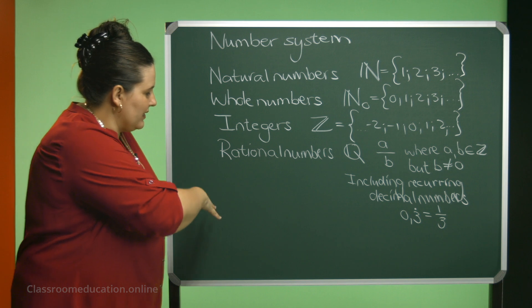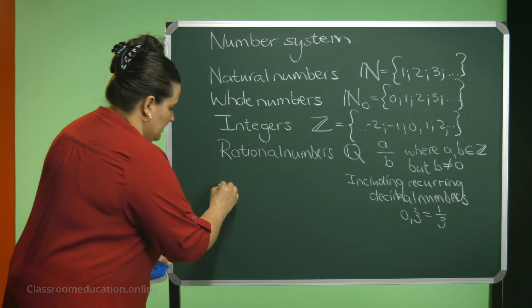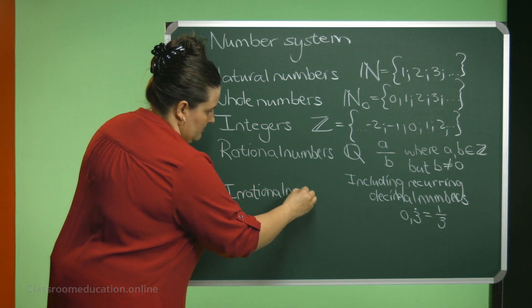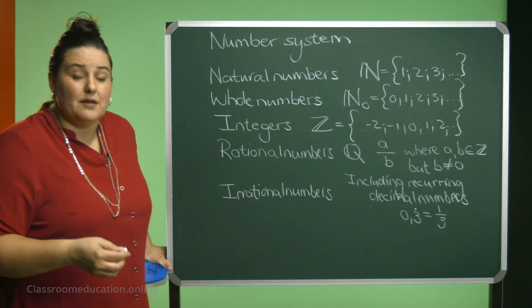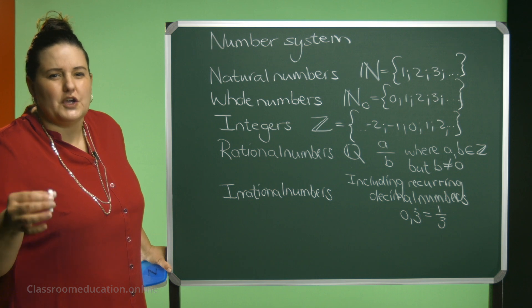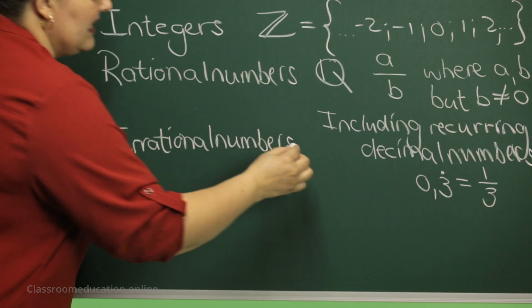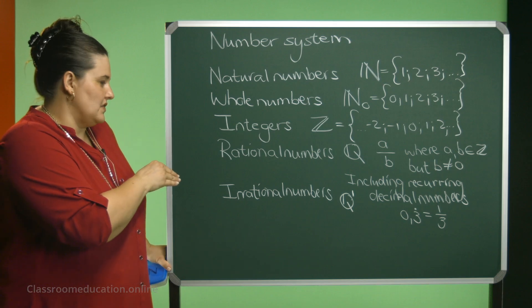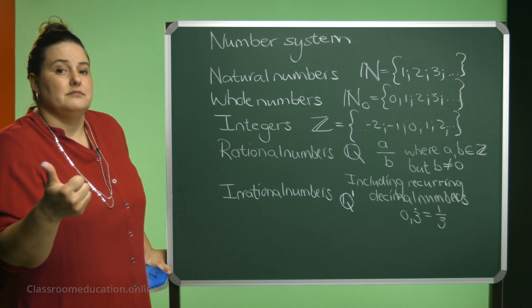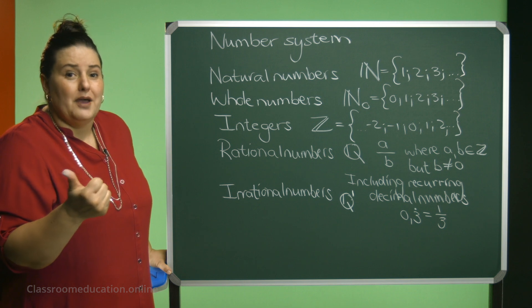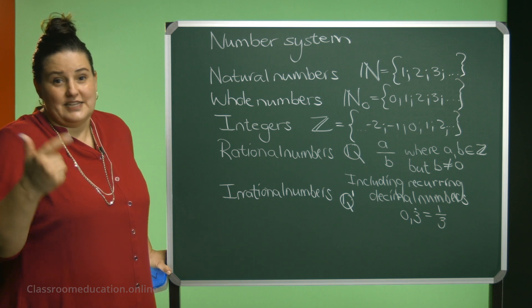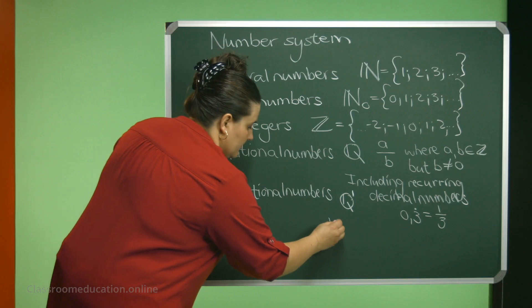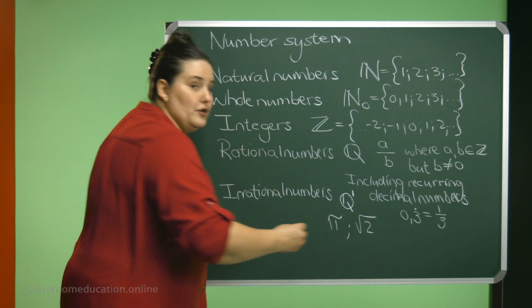The last type of numbers that we get is our irrational numbers. Some textbooks might differ in the symbol, but you can use the Q with a little line that means irrational. Irrational numbers, now these numbers, they are non-recurring decimal numbers. They are not recurring, but they are also never-ending decimal numbers. And you can get an example such as pi or maybe the square root of 2.